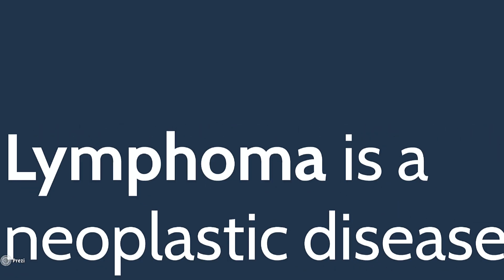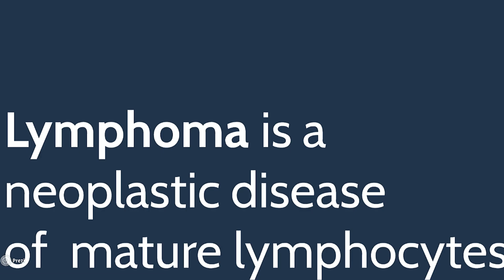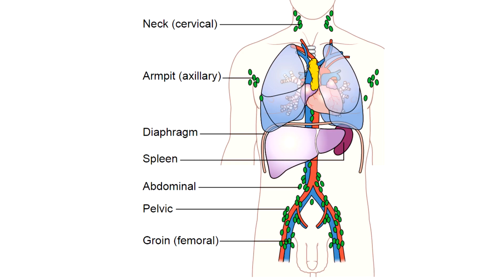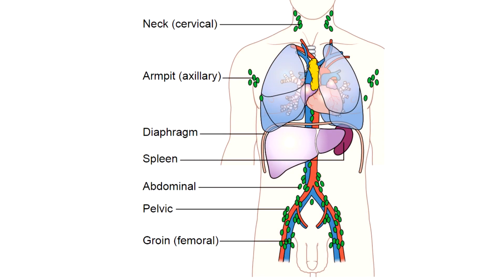Next is lymphoma. Lymphoma is a neoplastic disease of mature lymphocytes in lymphoid tissue. This cancer can be found anywhere where grown-up lymphocytes can live — in the peripheral lymph nodes such as in the neck, in the lymph nodes in the chest, or anywhere where lymphoid tissue is, for example in the gut or in the tonsils.